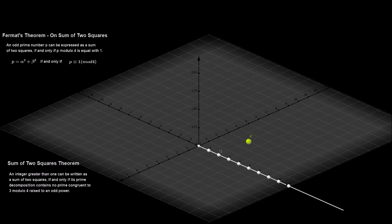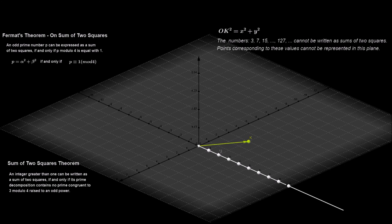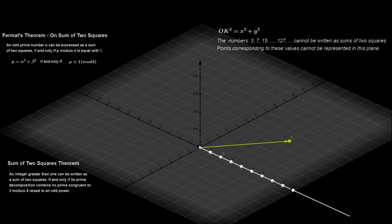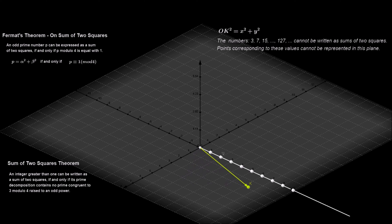Any complex number with integer real part and imaginary part belongs to this complex discrete plane. The magnitudes of these complex numbers are always the square root of a natural number. But it is important to note that there are complex numbers with a magnitude equal to the square root of some natural numbers which cannot be represented in this plane.